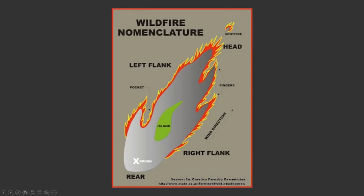The terms we're working with: Origin is where the fire started. Wind direction pushes the fire in whichever direction it pushes. The rear of the fire is back by the origin. An island is an area where the fire burned around — whether it be a low spot, high spot — somewhere the fire didn't burn.